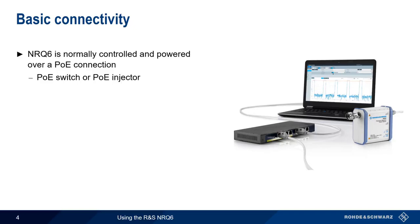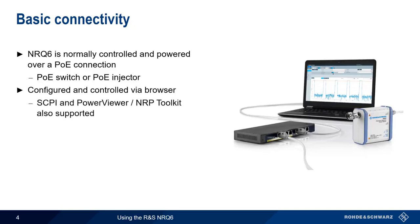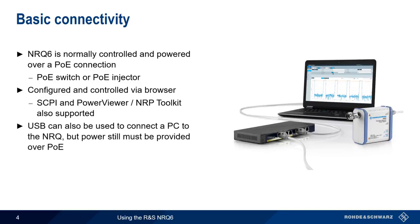The NRQ is also normally both configured and controlled by means of a web browser, meaning that no additional software is needed to use the NRQ. It is, however, possible to control the NRQ remotely using SCPI commands, or using the standard Rohde & Schwarz Power Viewer and NRP Toolkit. Note that even when connecting to the NRQ via PC and USB, a Power Over Ethernet connection is still required to provide power to the NRQ.